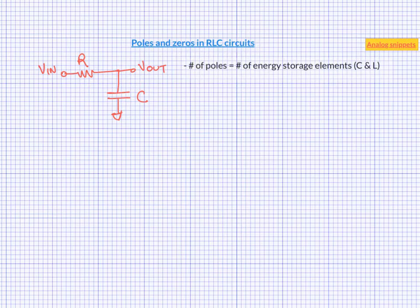Now, this rule comes with a caveat which we will see in a few minutes, but it is a very good, very useful rule for initial estimate of number of poles in a circuit. So count the number of capacitors and inductors and that will be roughly the number of poles in that circuit.